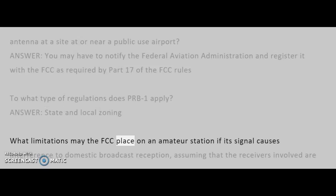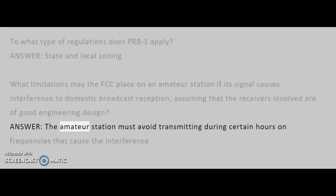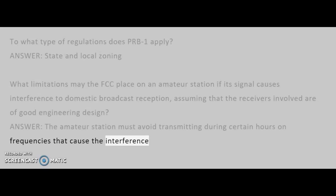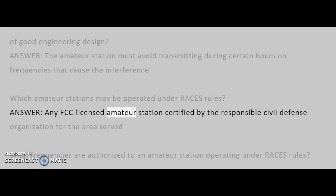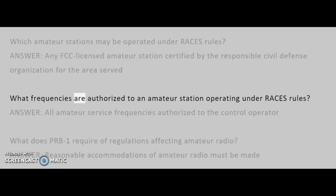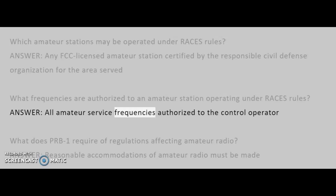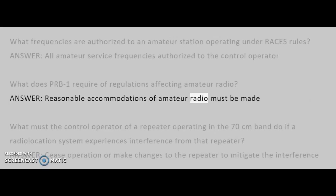What limitations may the FCC place on an amateur station if its signal causes interference to domestic broadcast reception, assuming receivers of good engineering design? Answer: The amateur station must avoid transmitting during certain hours on frequencies that cause the interference. Which amateur stations may be operated under RACES rules? Answer: Any FCC-licensed amateur station certified by the responsible civil defense organization for the area served. What frequencies are authorized under RACES rules? Answer: All amateur service frequencies authorized to the control operator. What does PRB-1 require of regulations affecting amateur radio? Answer: Reasonable accommodations of amateur radio must be made.